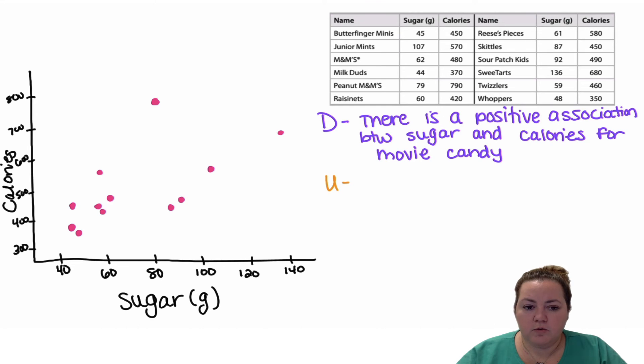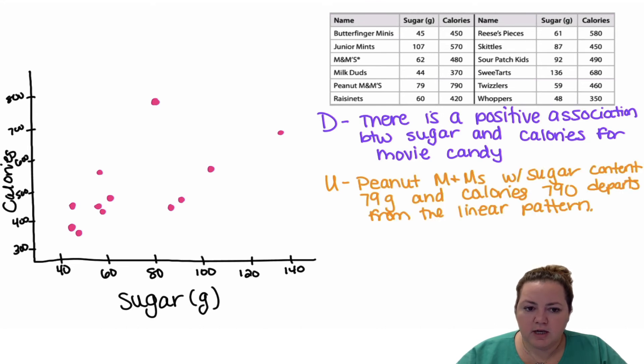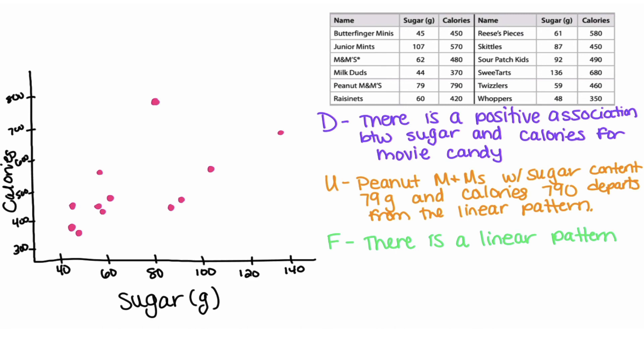U stands for unusual features. It looks like the peanut M&Ms at 79, 790 is maybe a possible outlier. It doesn't really fit with that linear pattern. It departs from the linear pattern. For form, we will say that there's a linear pattern. There's not an obvious curve going on here.